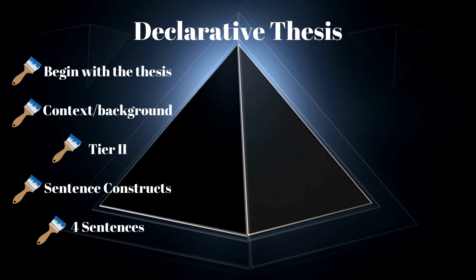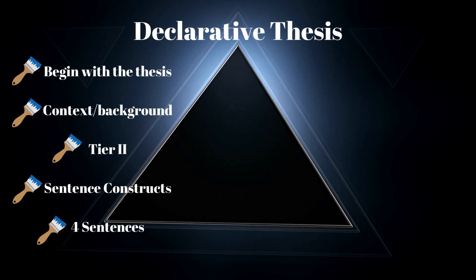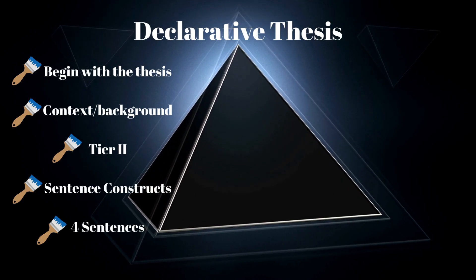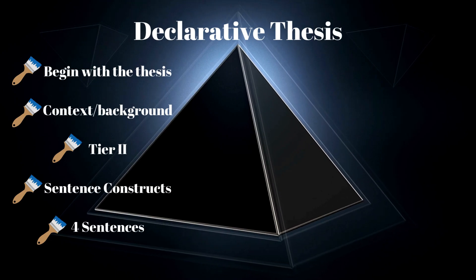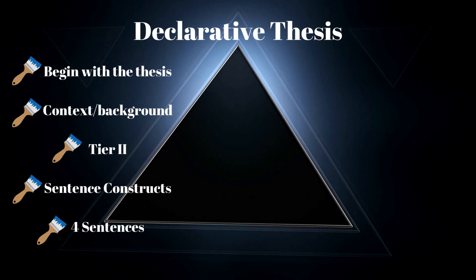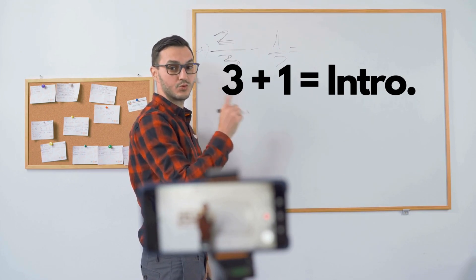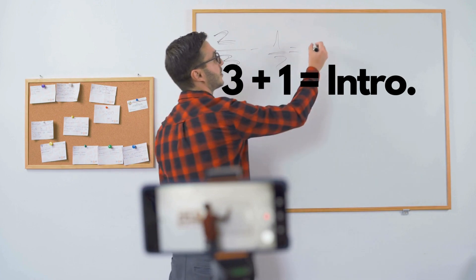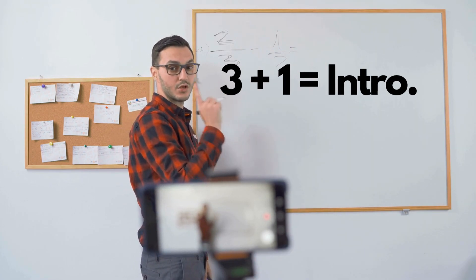You're going to begin with the thesis, sprinkle in some context and background, tier-two vocabulary, and sentence constructs. My introductory heuristics always call for four sentences. Quick synopsis: three sentences — construction of meaning; one sentence — authorial intent. I'm going to model this for you three times. Here is my first one.